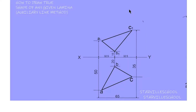Hello and welcome to our activity for today. Today we will be using the auxiliary line method to solve any problem that has to do with oblique planes — planes that are inclined both to the vertical and the horizontal planes.